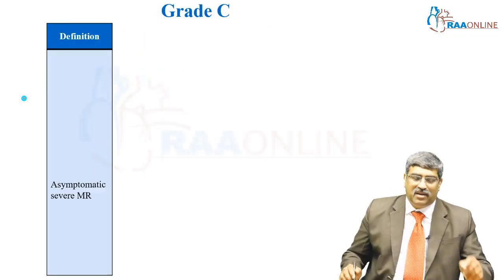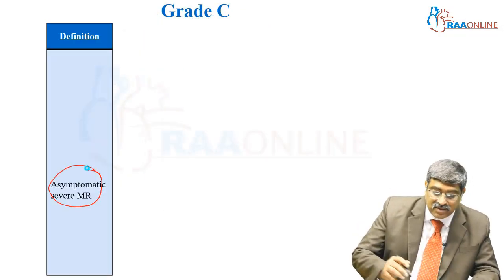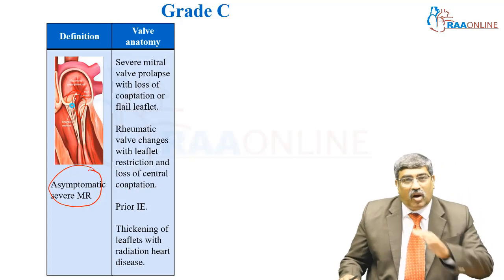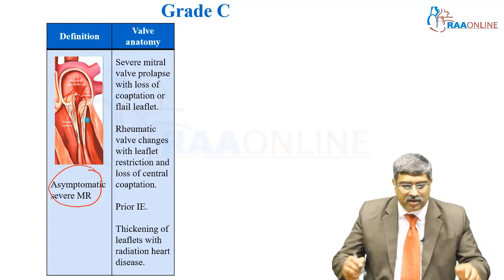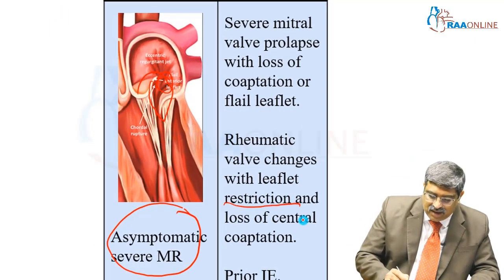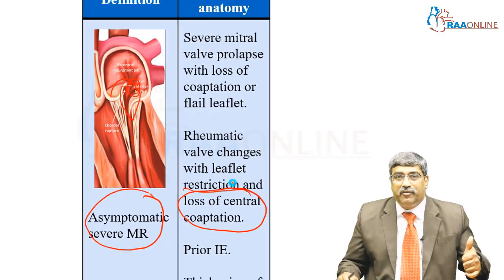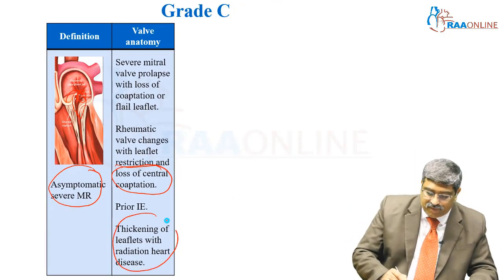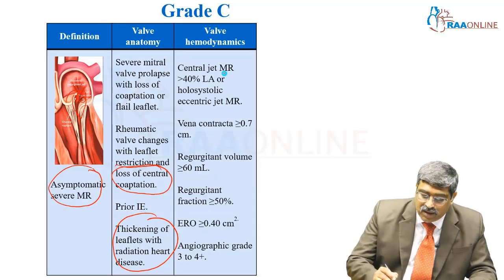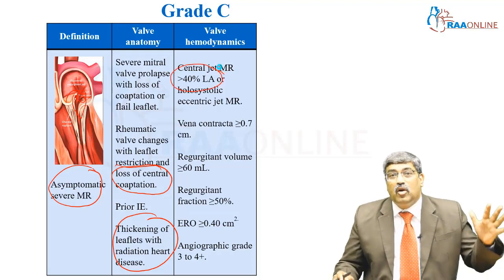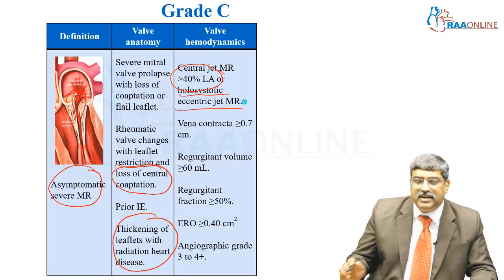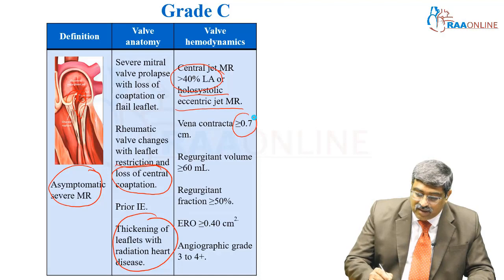Grade C is asymptomatic but severe MR. Morphology includes severe mitral valve prolapse, loss of coaptation, flail leaflet, rheumatic leaflet restriction with loss of central coaptation, prior infective endocarditis, or leaflet thickening from radiation heart disease. Valve hemodynamics show a central MR jet greater than 40% of the LA or a holosystolic eccentric jet. Vena contracta is greater than 0.7 cm.